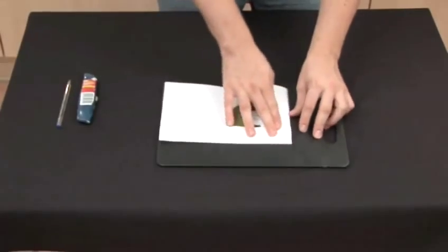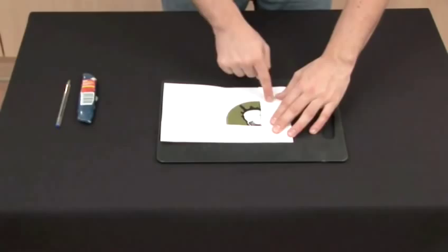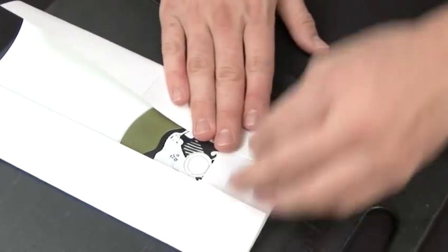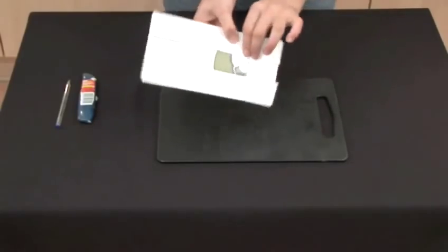Try to keep the CD roughly central on the card. Repeat this fold on the opposite side so that the card is now framing the disc's central circle on three sides.